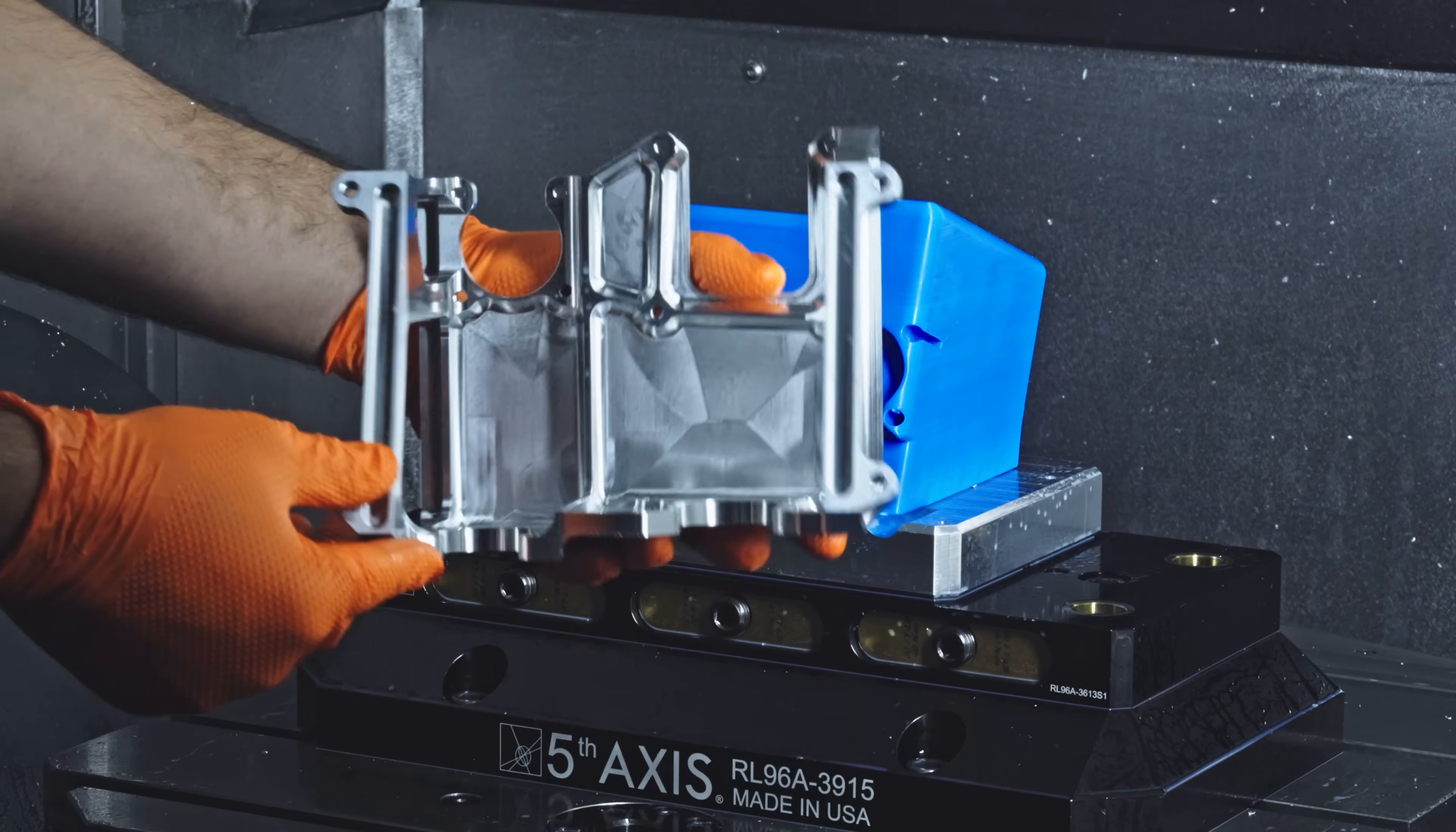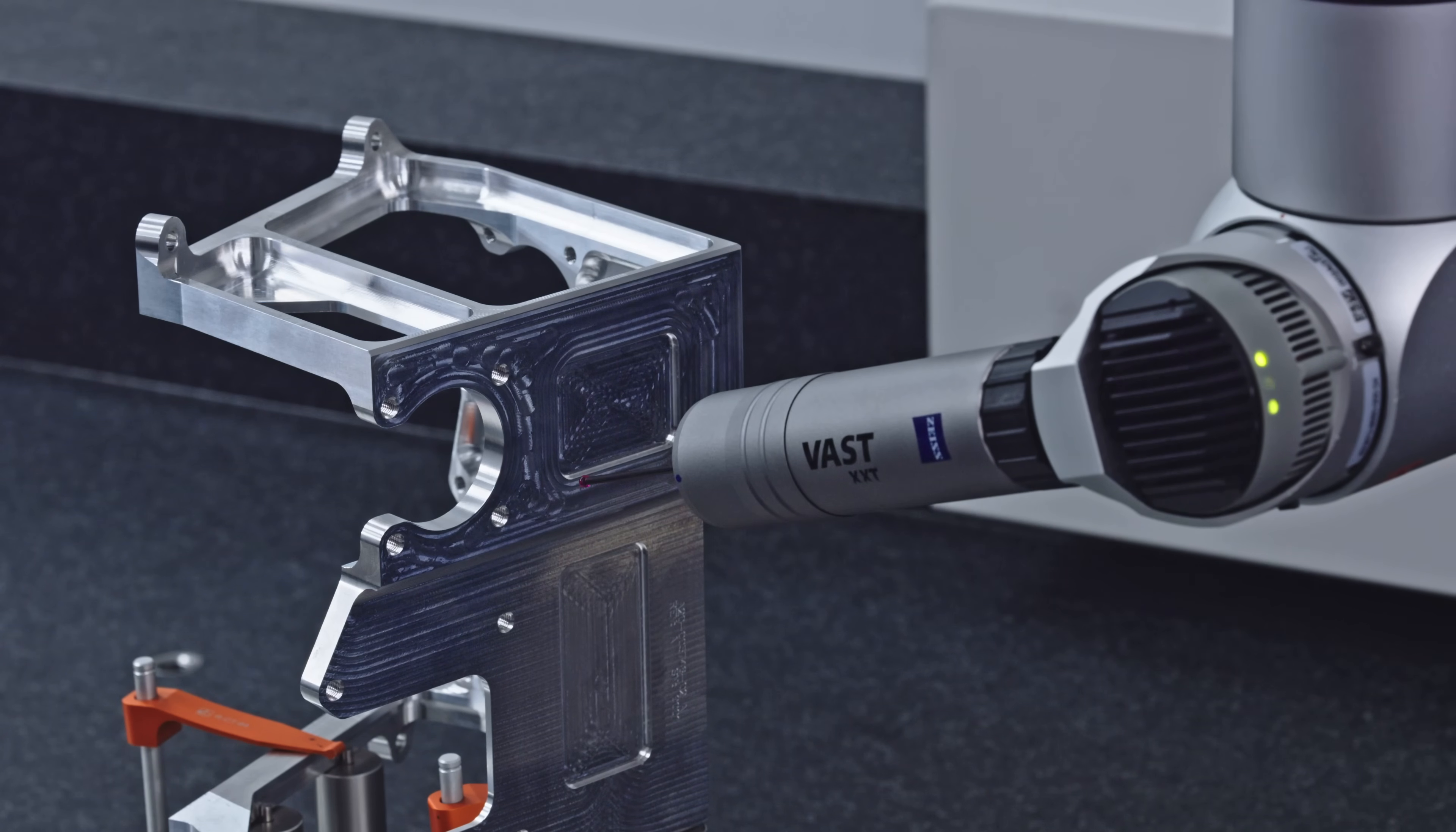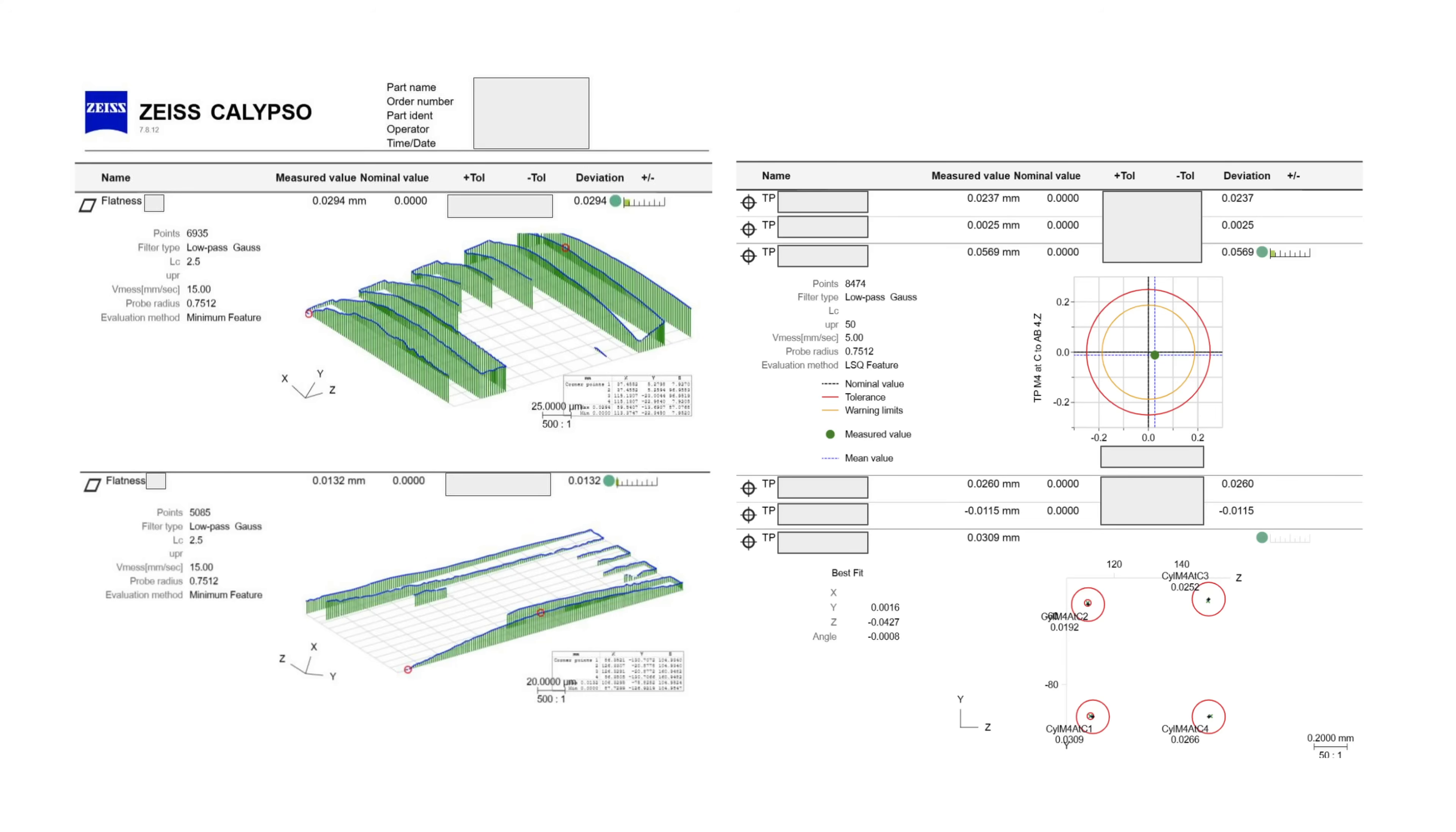To verify our part, we're inspecting it on a Zeiss VMM, or coordinate measuring machine. Even though the part may look flimsy, all faces are flat within 0.02mm, and the hole locations are well within 0.1mm.